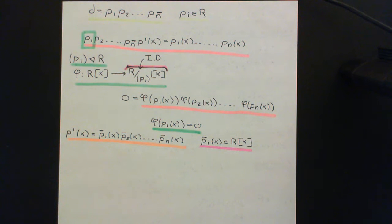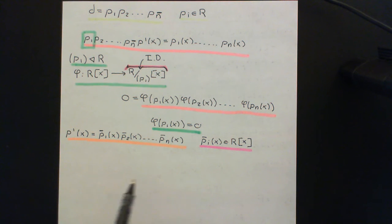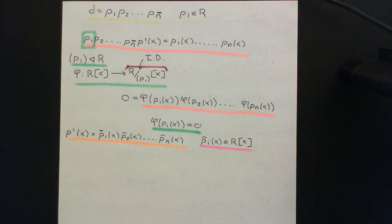Welcome to this next video in which we are discussing polynomial rings which are unique factorisation domains. So what I've now successfully managed to do is write my polynomial p'(x) as a product of polynomials p̄₁(x), p̄₂(x), all the way down to p̄ₙ(x), where all of these polynomials are from the ring of polynomials over the unique factorisation domain. But I need to make sure now that these polynomials are actually irreducible in my ring of polynomials over the unique factorisation domain.